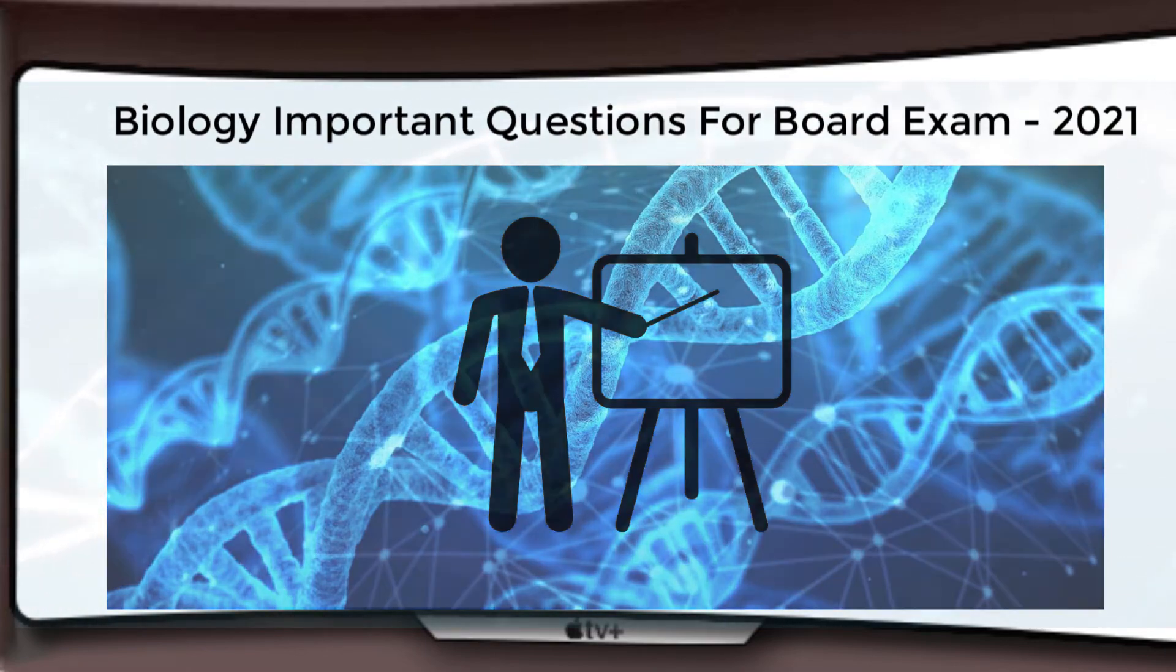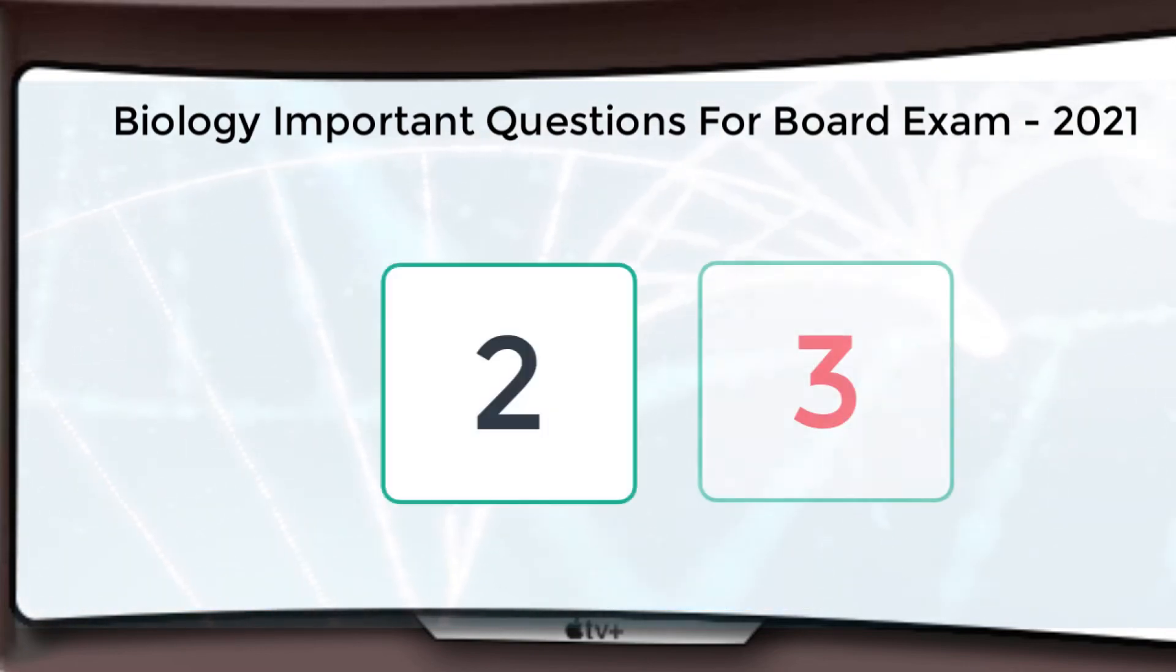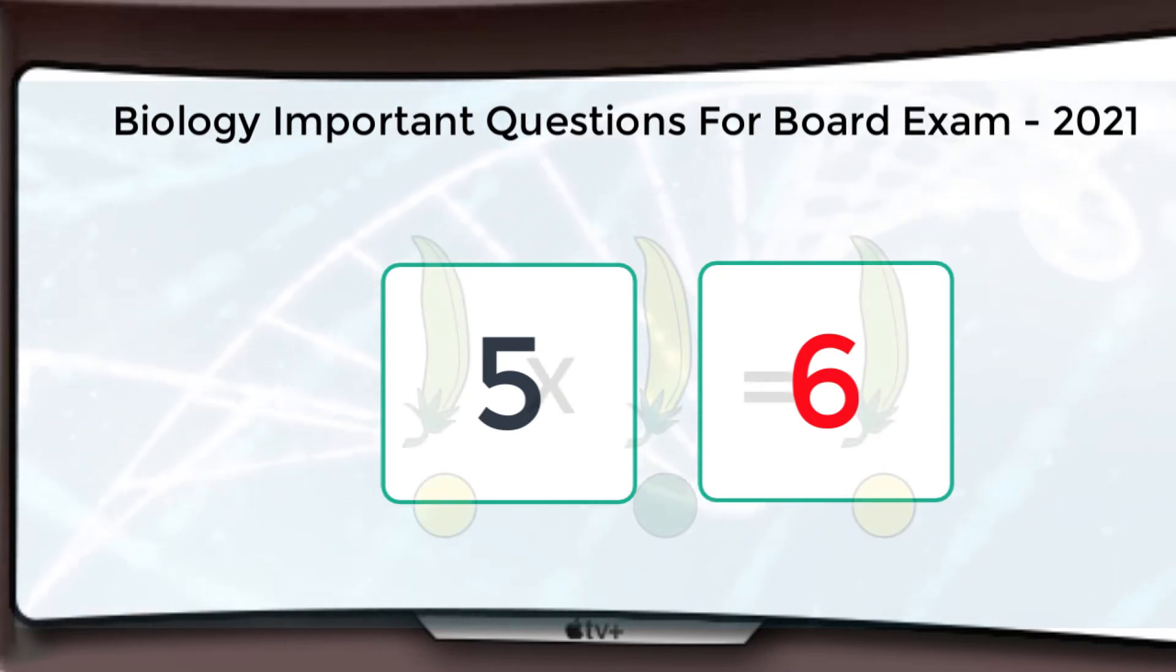Mostly this chapter comprises five to six marks in a question paper. And if I talk about Principle of Inheritance and Variation, that chapter acquires seven to eight marks for a particular question paper. So you have an idea now.